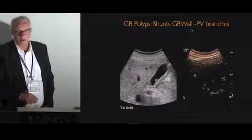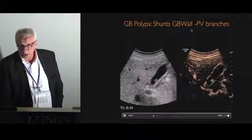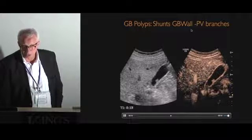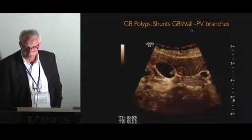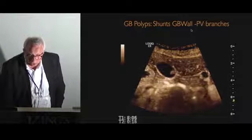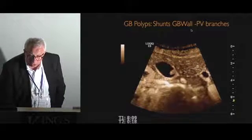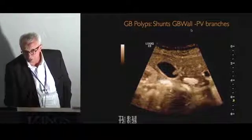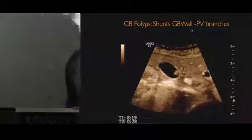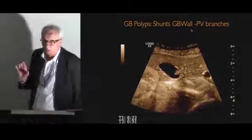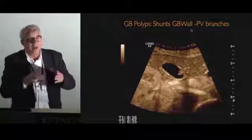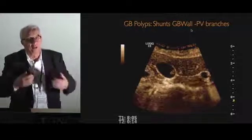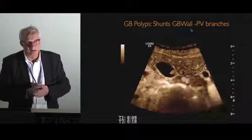This is a gallbladder polyp — you can see the perfusion of the wall of the polyp. More interesting: when you look carefully, you can see vessels from the gallbladder wall going into the portal venous branches. My idea is that this is one of the reasons why the prognosis of gallbladder cancer is so poor — these shunts mean that tumor cells are immediately going into the adjacent liver tissue, making the prognosis very poor.